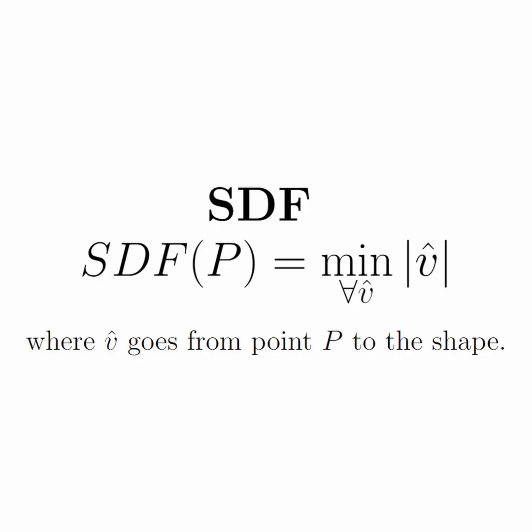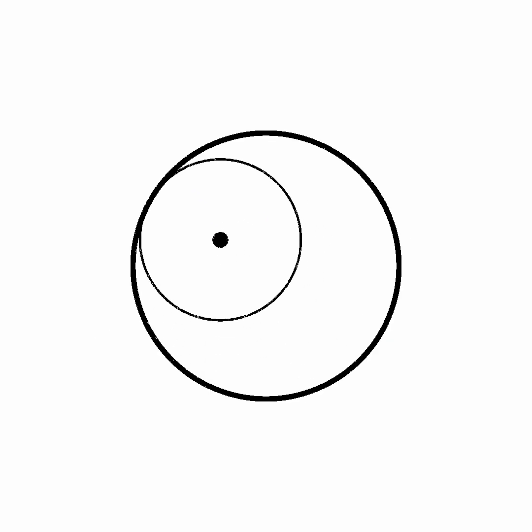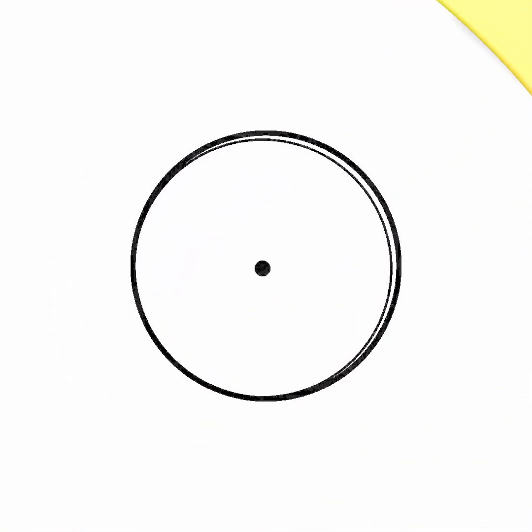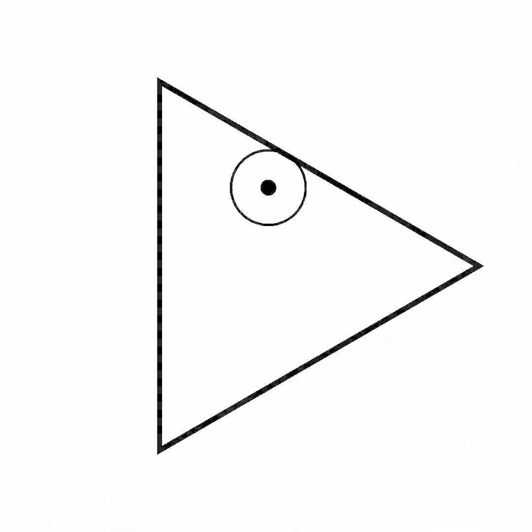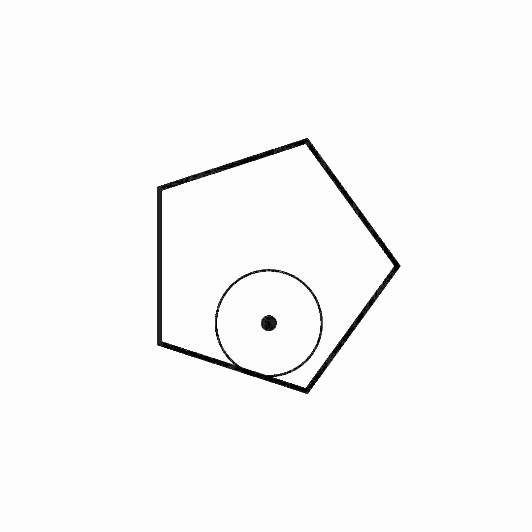I'm going to let that sink in because I don't think it's an obvious concept. If you have a shape, like let's say a circle, what you're trying to evaluate is on every point in the XY plane, or you could also do this three-dimensionally, what is the minimum distance I need to travel to get to the surface of that shape.